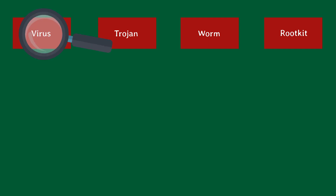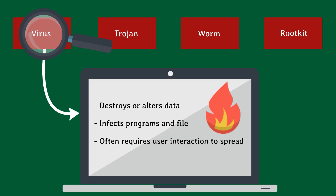The traditional malware is a virus. In general, a virus works to infect a file or a program to destroy, steal, or alter data. Viruses are very malicious, but often require user interaction in order to start the process. This often happens when a user clicks on a bad link, downloads an infected file, or installs a malicious program.